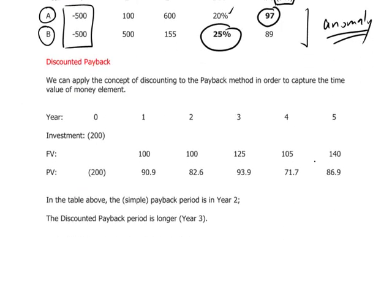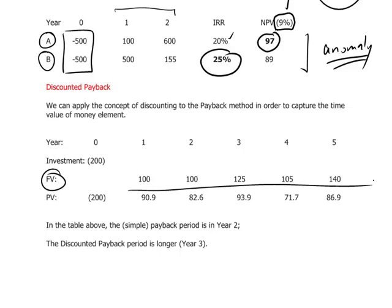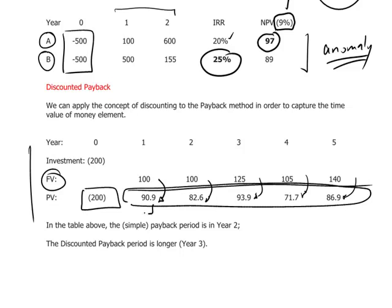Finally, the discounted payback method. We talked about simple payback before, which involves counting dollar-for-dollar future cash flows against the initial investment amount. The discounted payback makes an adjustment: it discounts those future cash flows first and then does the payback calculation to see how fast we can cover the initial investment amount. We can see here that future values are discounted back at a certain discount rate, and it is these discounted amounts that are accumulated against the initial investment.